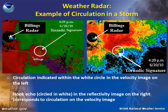In the base velocity image on the left, we can see a small area of circulation within the white circle. Inbound velocities, the green colors, are located right next to a region of outbound velocities, the red colors. A base reflectivity image from the same time shows that there is a hook echo, which is also circled in white, where we see the circulation on the base velocity product. This was how low-level base velocity and base reflectivity data appeared at the time of the June 20, 2010 tornado in Billings.